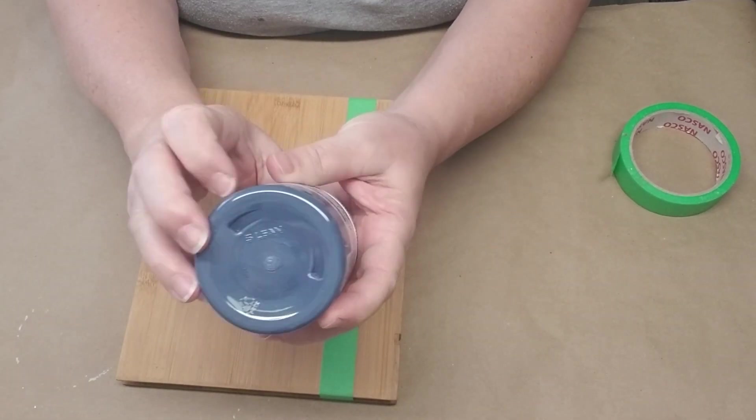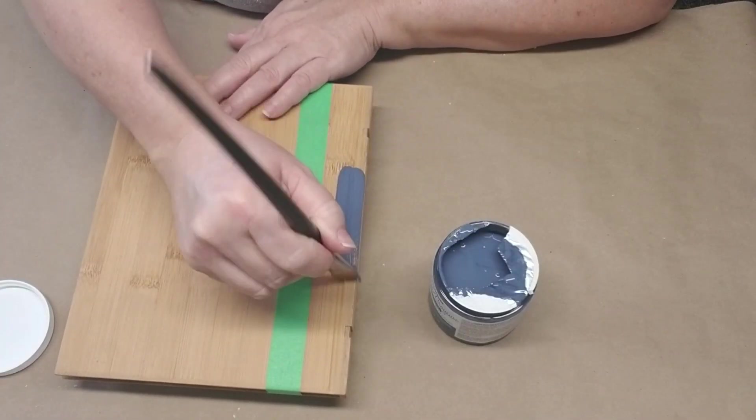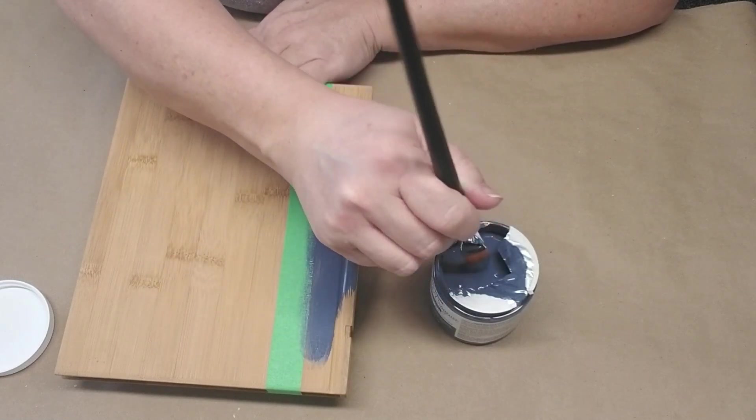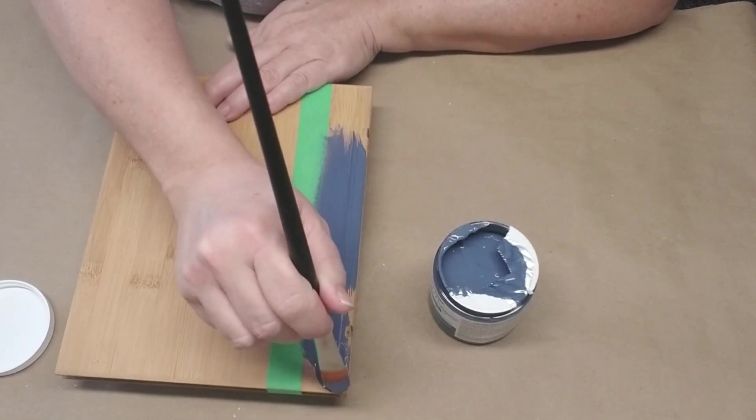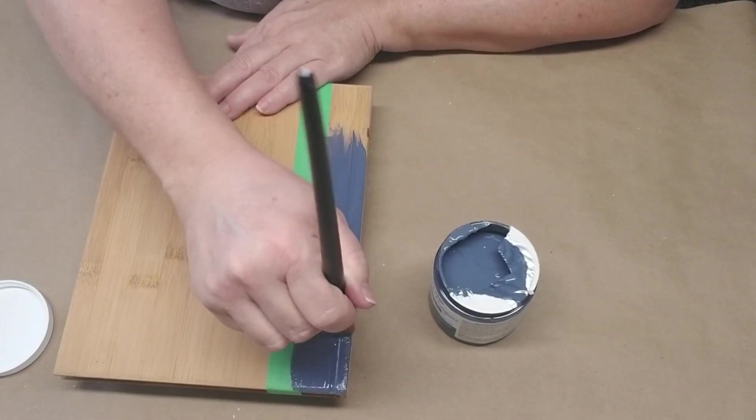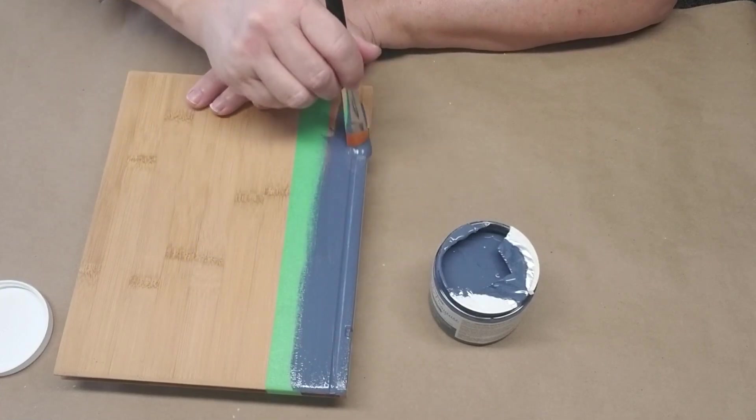The first color I'm going to use is Coastal Blue by Rustoleum. It is a chalk paint and I'm going to paint the darker blue on the side of the book that is the binding, so I want to mimic what a regular hardcover book would look like without the jacket on it.